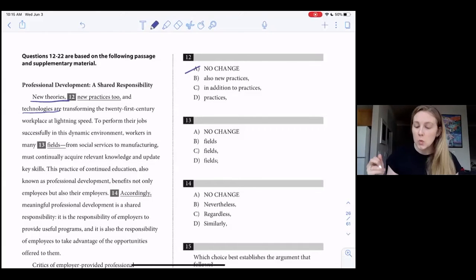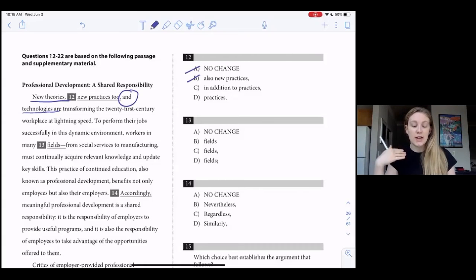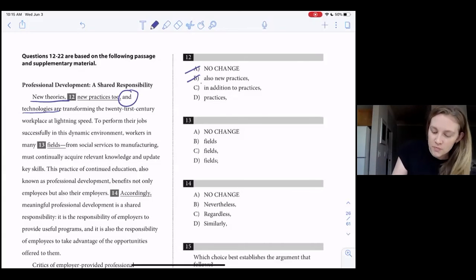All right, we also see that B and C are repetitive in that B has also, and also uses the word new, so that's out. And then C says in addition to practices, but this is only the second piece of this list. And since the word and comes afterwards, we should not also use in addition here, because that's repetitive. So what that leaves us with is D.